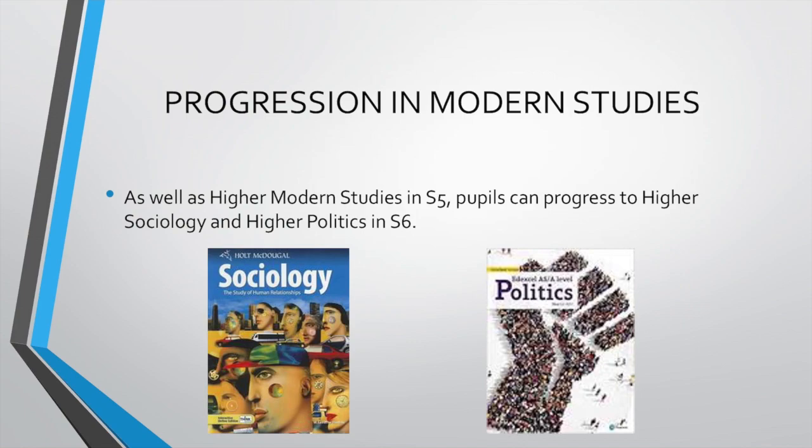For progression in Modern Studies, pupils achieving National 5 in S4 would be expected to go on to do Higher. Pupils achieving National 4 in S4 have the option to study National 5 in the senior phase. Modern Studies also, uniquely for Holyrood, offers an opportunity to go and study sociology or Higher Politics in S6, for pupils who are keenly interested in social subjects and think that's something they might study when they leave school. Modern Studies offers an excellent path into studying these subjects, which offer a path into further education once they have left school.